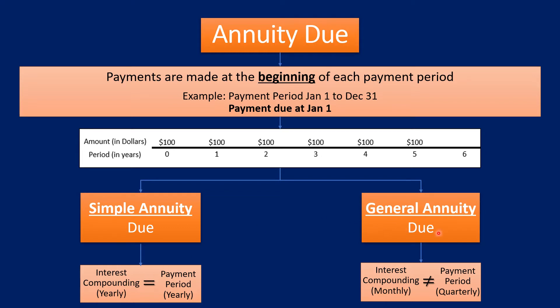In a general annuity due, the interest compounding and the payment period frequencies are not the same. For example, if interest compounding is monthly and payments are quarterly, or if compounding is semi-annually and payments are annually — they don't match. Now let's get into how the formula is derived for the annuity due.